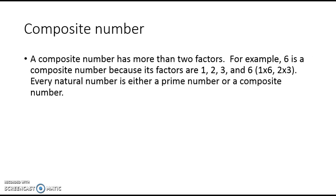And then lastly a composite number is a number that has two or more factors. So 6 is a composite because its factors are 1, 2, 3, and 6. Every natural number is either a prime number or a composite number.